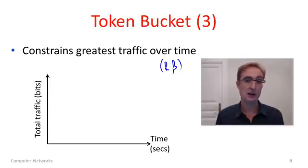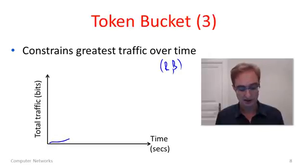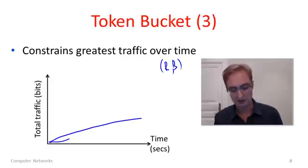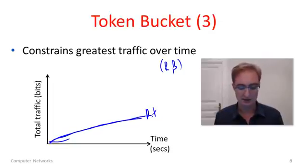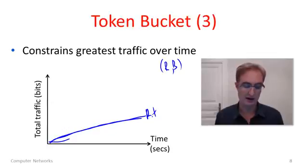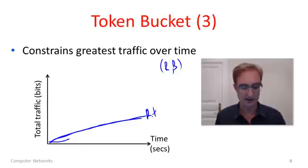We do know something about it from the R and B parameters. This line here represents R times time — the long-term average rate over time, going up at rate R. This is the average rate, so we expect traffic to go into the network this fast over time.